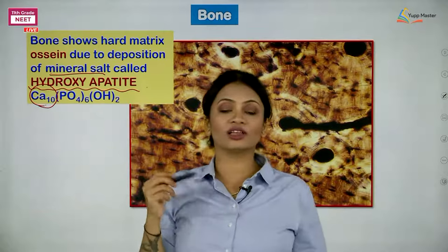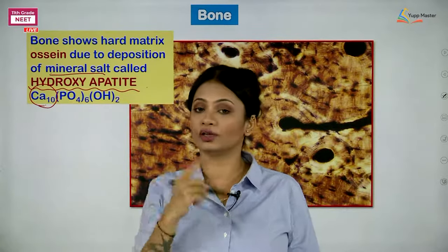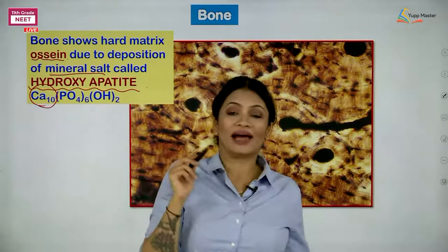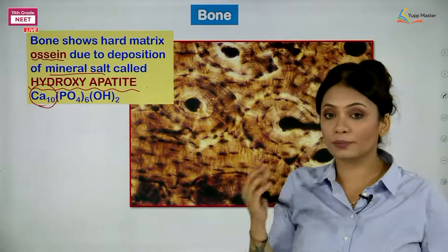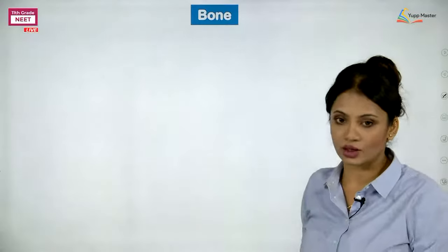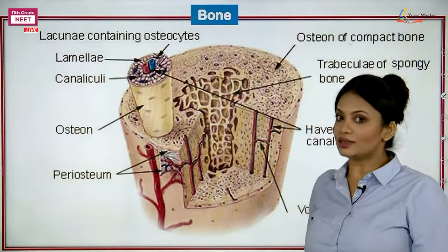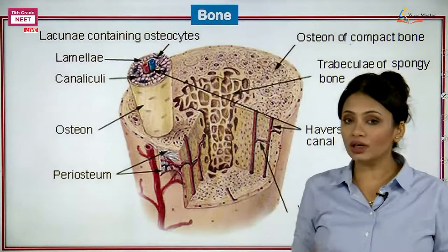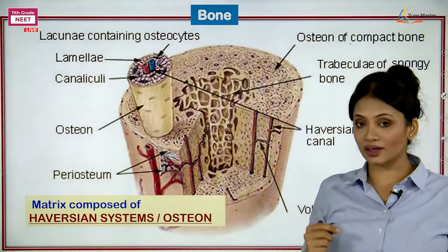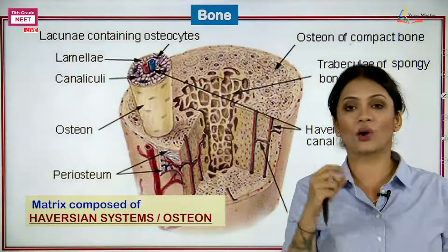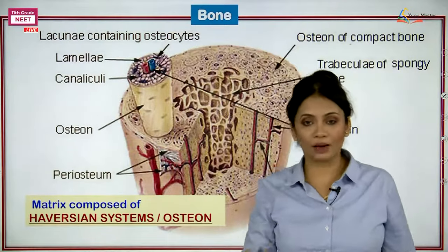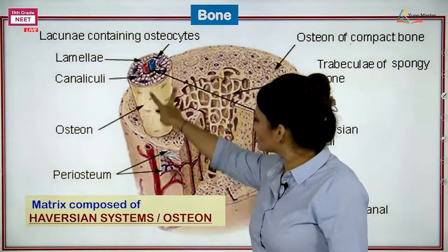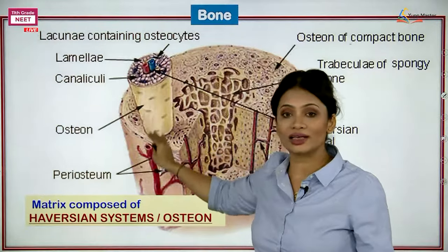The matrix present in bone is called ossein. Due to the deposition of hydroxyapatite salt, the ossein matrix becomes very hard. The basic structural unit of bone is called an osteon, also known as the Haversian system. The Haversian system runs the full length of the bone.